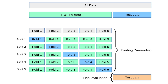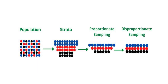It shows how your model performs across different subsets of your data, giving you a more realistic estimate of real-world performance. Watch for stratification in classification problems — ensure each fold maintains the same class distribution as your full dataset, and make sure the folds are selected randomly.